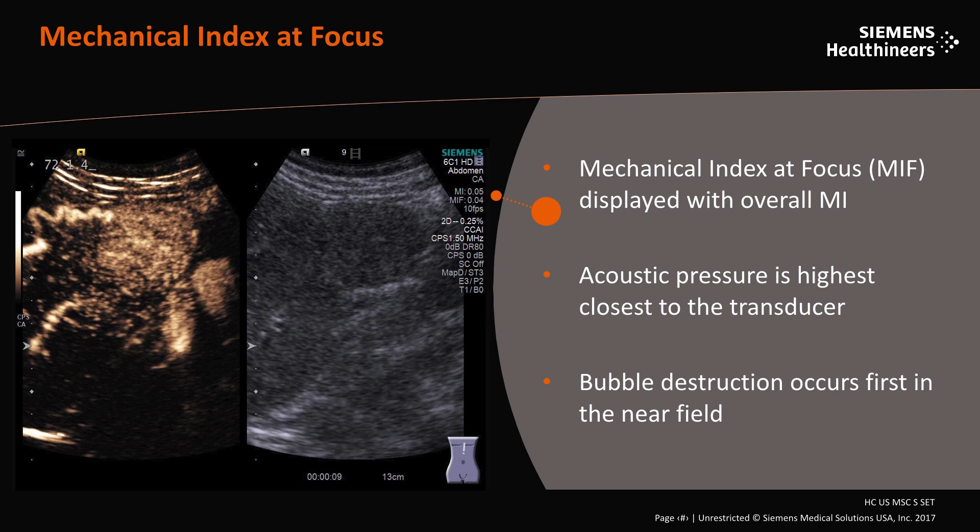Contrast imaging is always a balance between achieving good image quality while maintaining bubble integrity. Mechanical index directly impacts bubble integrity — higher mechanical index equates to higher bubble destruction. During a contrast exam the MI is kept as low as possible.